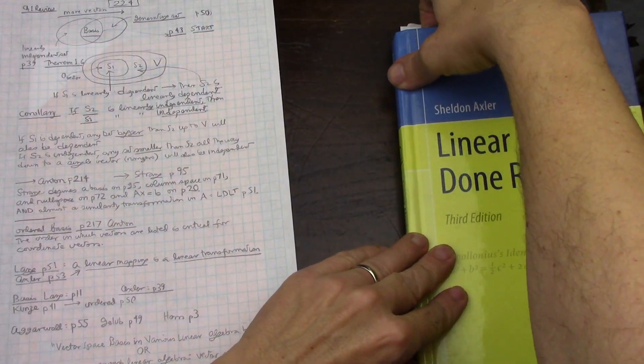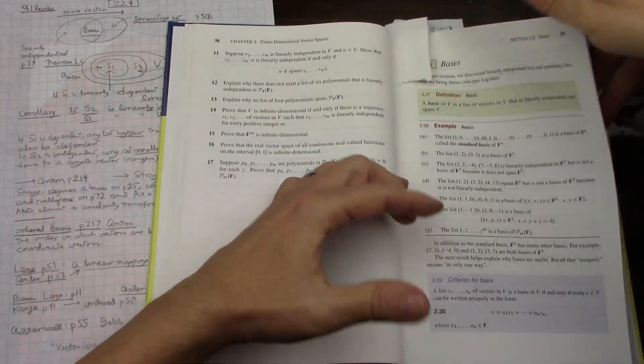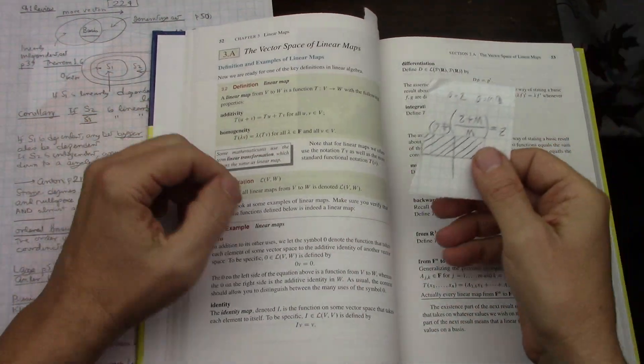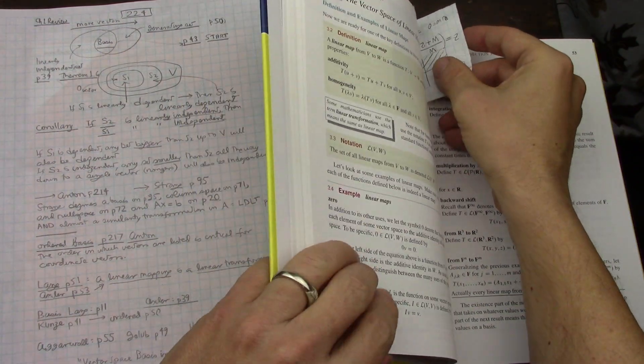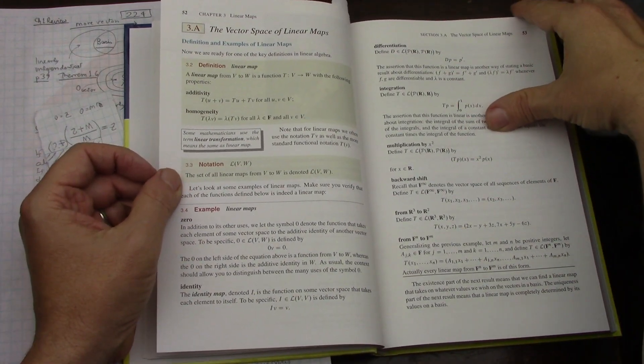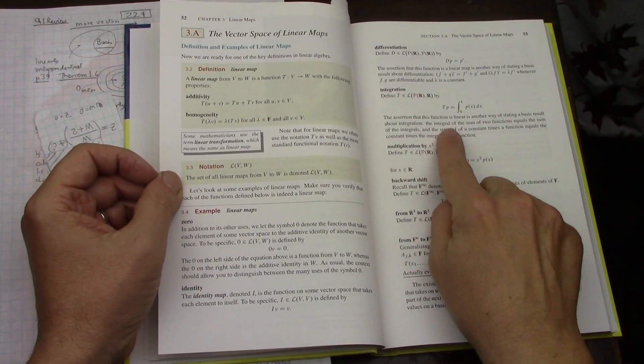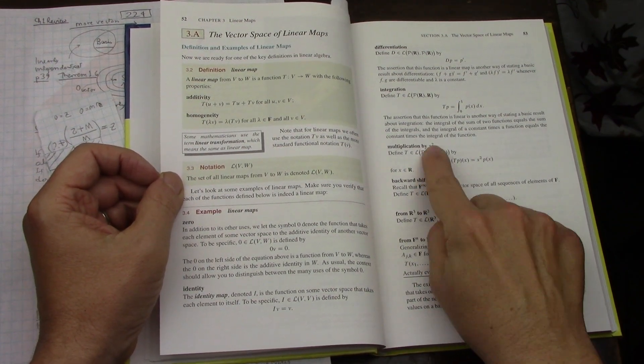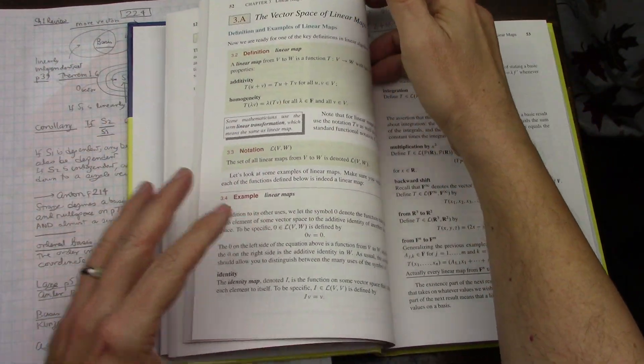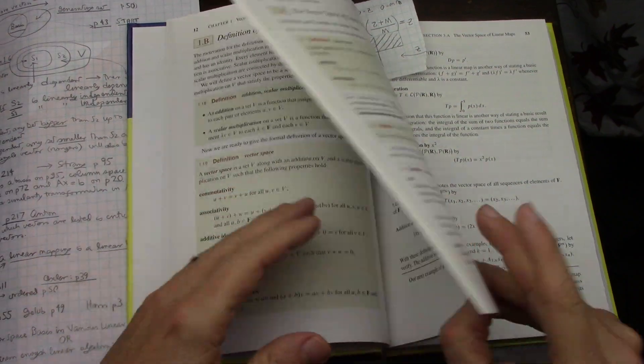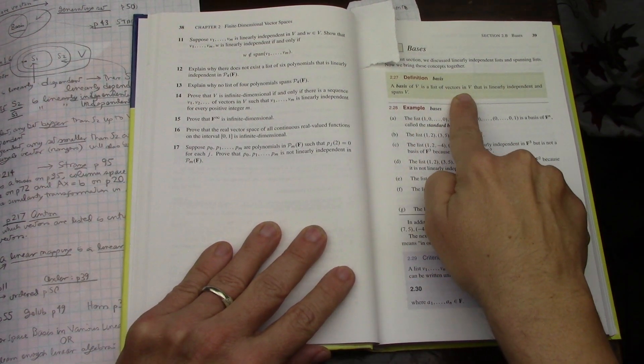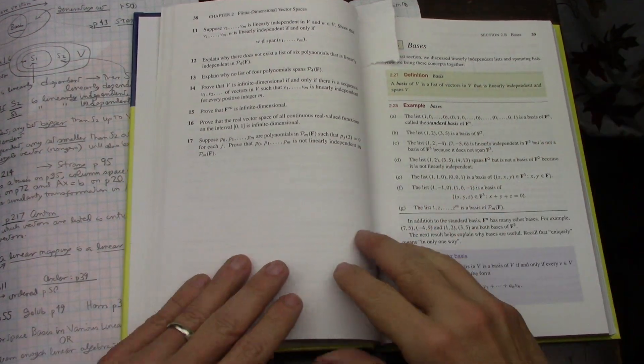If we move to Axler on page 53, that's where he talks about linear mappings and linear maps. Axler makes heavy use of the terminology linear map. He also takes all the transformations and defines the vector space of all transformations, this curly L that is also done in FIS. But the definition for a basis in Axler is on page 39. A basis of V is a list of vectors in V that is linearly independent and spans V. Very brief and to the point.